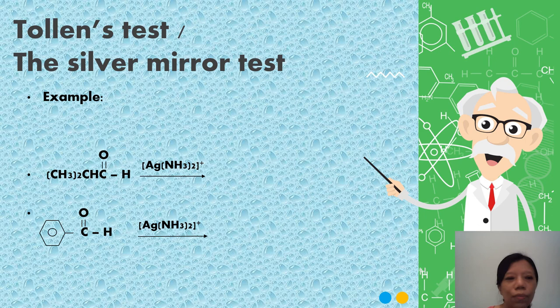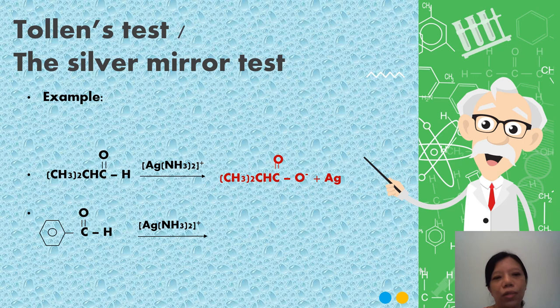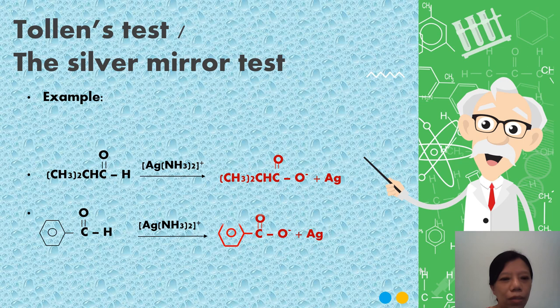Tollens test example reaction. When you have 2-methylpropanal with silver diamine ions, it is oxidized to carboxylic acid. Then benzaldehyde forms benzoate.